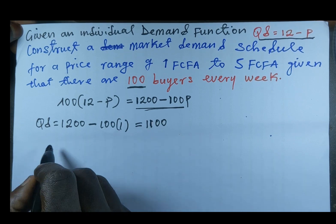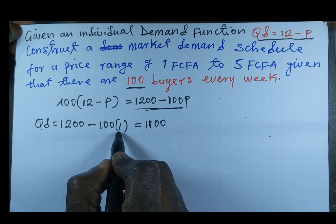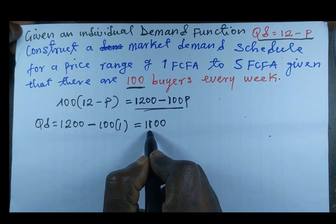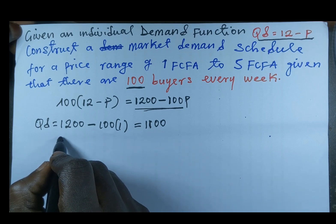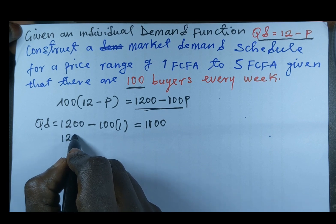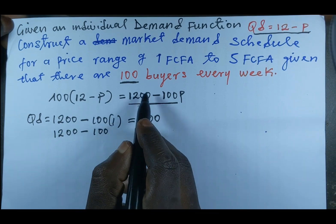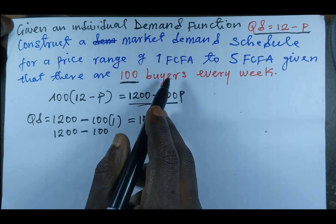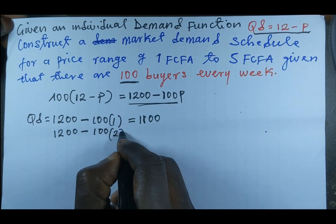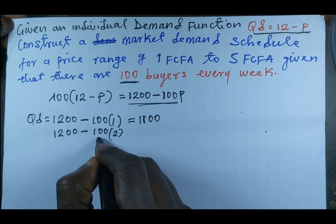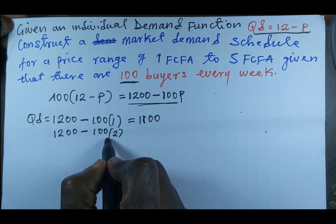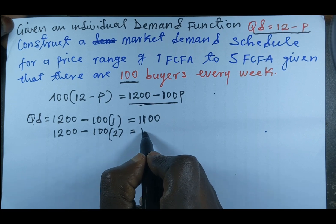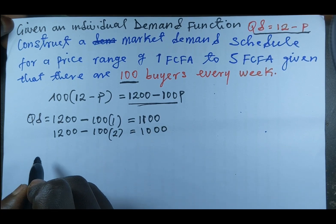At a price level of 1 FCFA, quantity demanded is 1100. When price increases to 2 FCFA, we have 100 × 2 = 200, so 1200 − 200 = 1000 as quantity demanded.